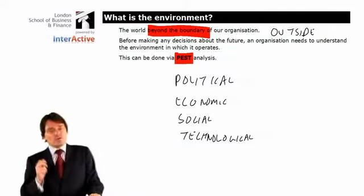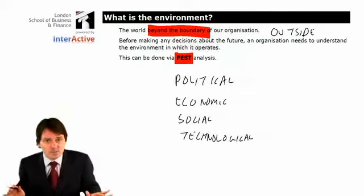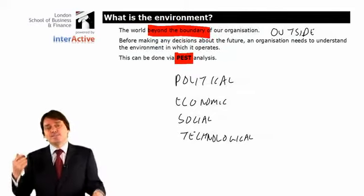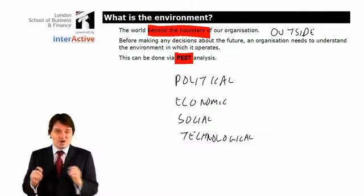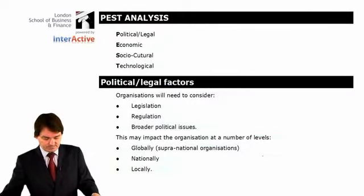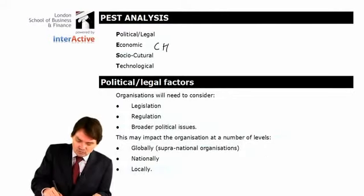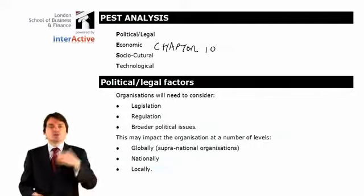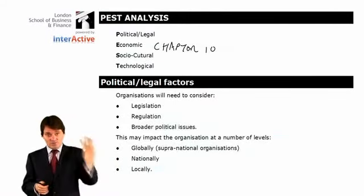The reason we're interested in PEST in paper F1 is simply to say something has changed. In paper P3, we'll start saying something has changed — is it making it harder or easier for us to run a business? For now, political, economic, social, technological. I'm not going to worry much about economic because that was chapter 10 — inflation, unemployment, tax rates, interest rates. That's stuff we've already seen. I'm interested in the other three for now.